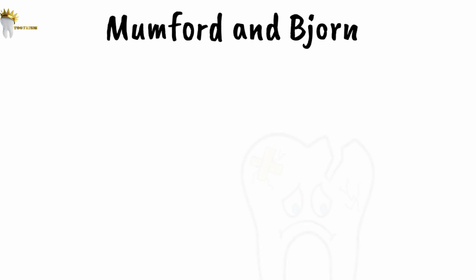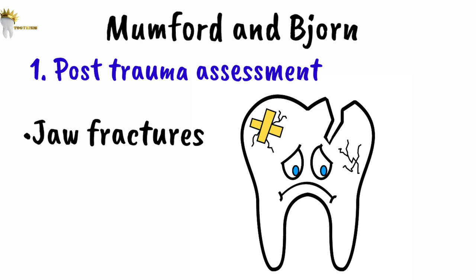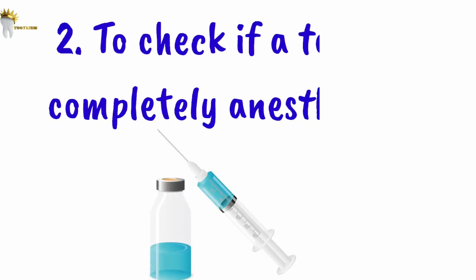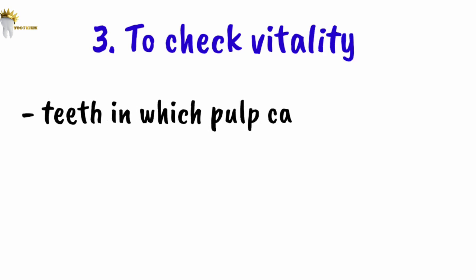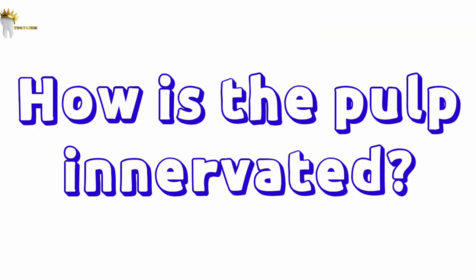In addition, Mumford and Beyond suggested three more uses of pulp tests. First, post-trauma assessment — checking vitality of traumatized teeth, teeth involved in jaw fractures, and teeth involved in surgeries like subapical osteotomy. Second, to check if a tooth is completely anesthetized after local anesthetic injection before starting an operative procedure, which is especially useful for experimental studies. Third, to check vitality of teeth where pulp capping was done or teeth with deep restorations.